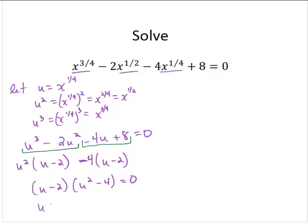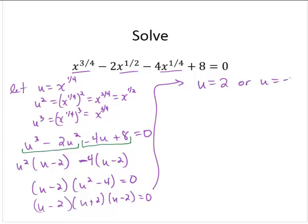So that means that u minus 2. And then the u squared minus 4, that's a u plus 2 and a u minus 2. So that tells me that u equals 2, or u equals negative 2.